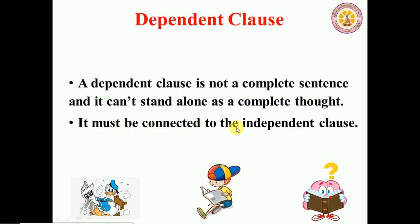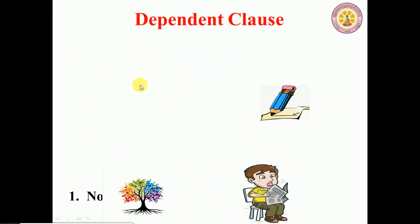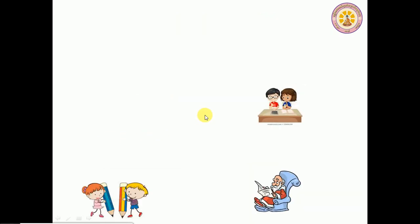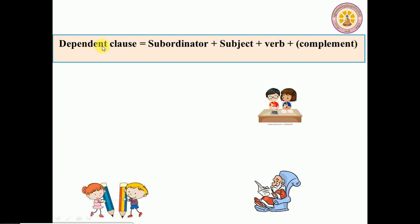The dependent clause must be connected to the main clause in order to make a complete sentence. Dependent clauses are divided into three different types: noun clause, adjective clause, and adverb clause. You will study all three types of dependent clauses in the next lesson.